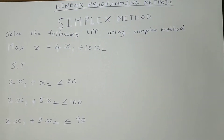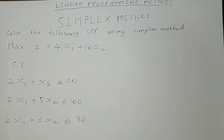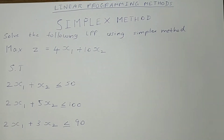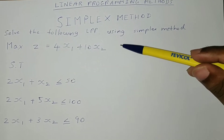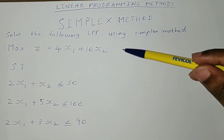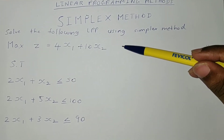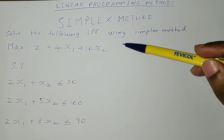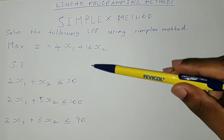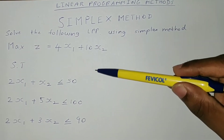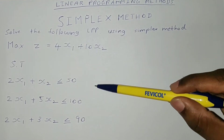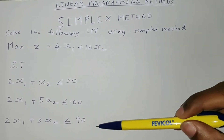The question will be given like this. Max z is equal to 4x1 plus 10x2, which is the objective function, subject to these constraints. There are three constraints given in this problem.